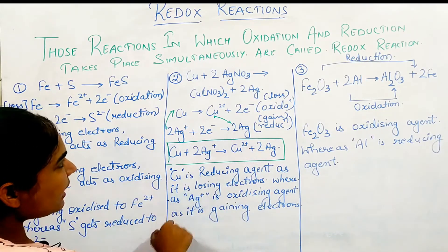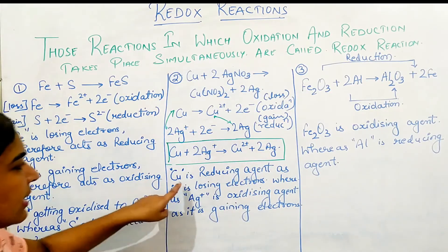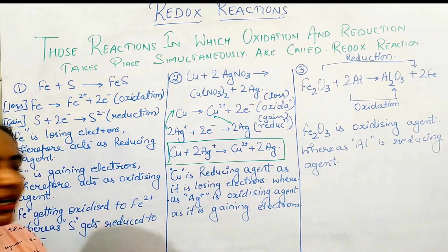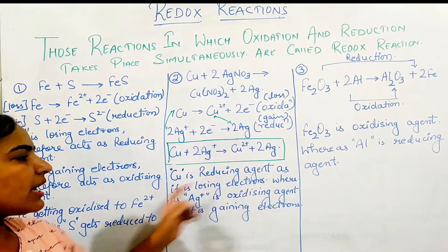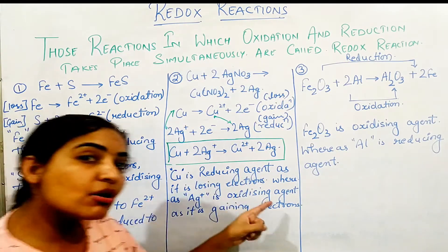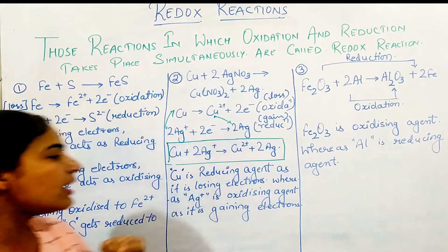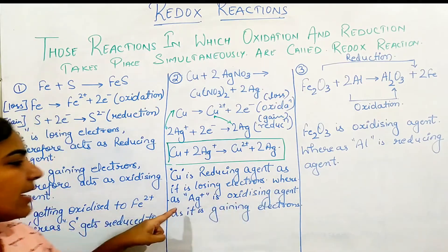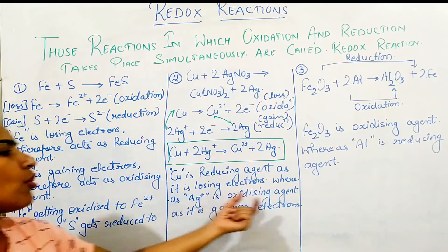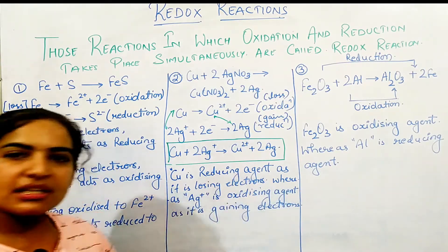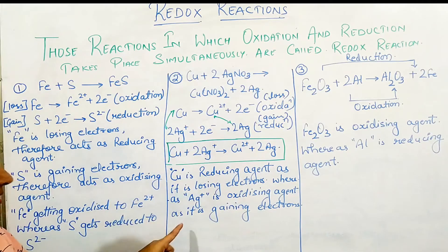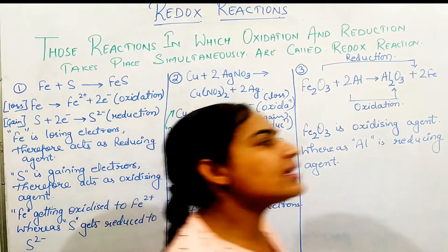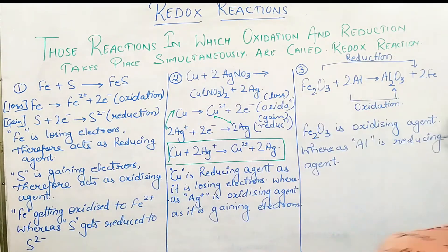We see that Cu is the reducing agent because there is a loss of electrons, while Ag is the oxidizing agent where it is gaining the electrons.